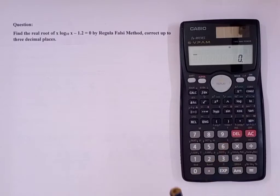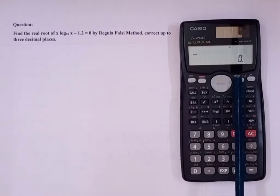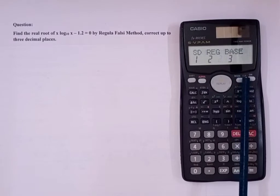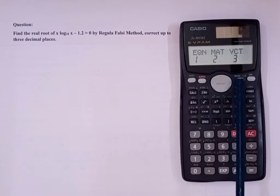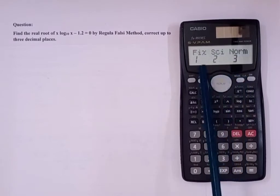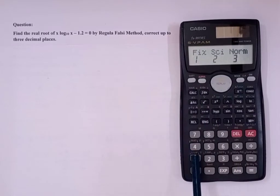Next, in the question it is given up to 3 decimal places. For that, we'll have to use fix mode. So just press mode 1 time, 2nd time, 3rd time, 4th time, and 5th time. As you can see here, fix. So press 1.